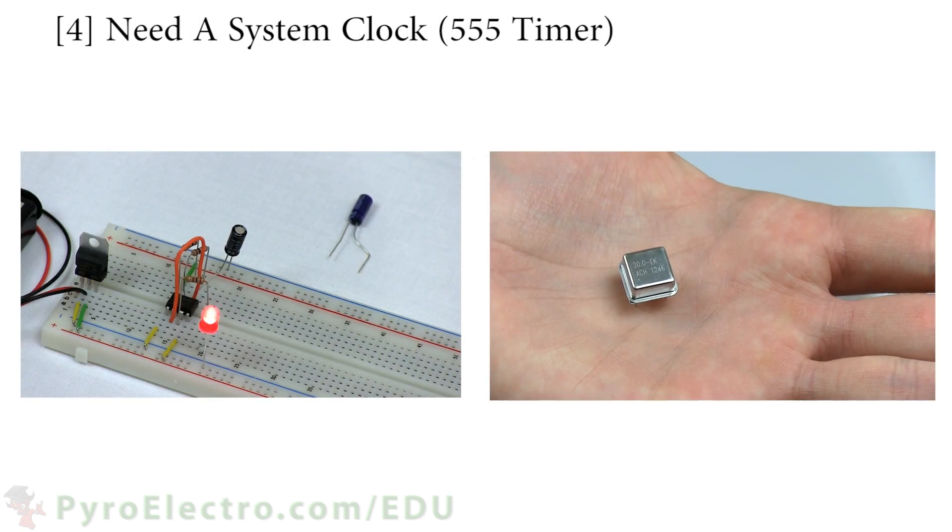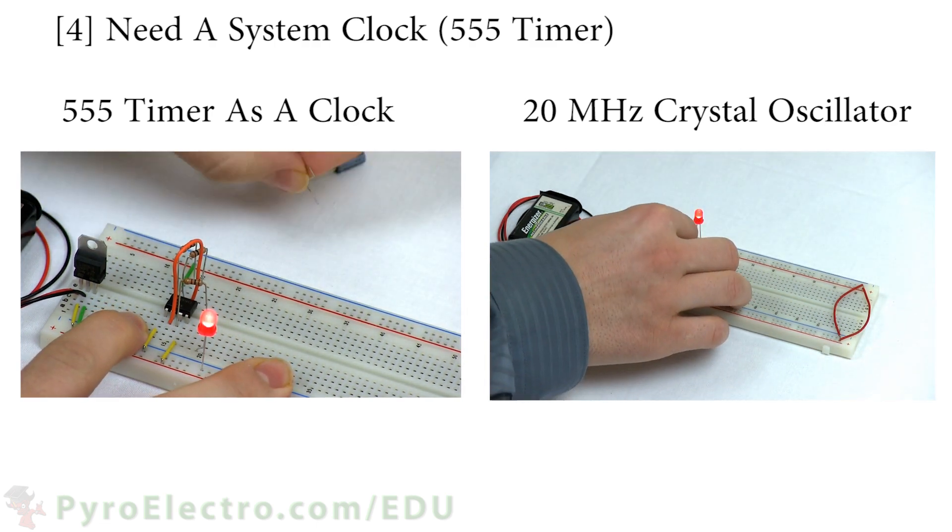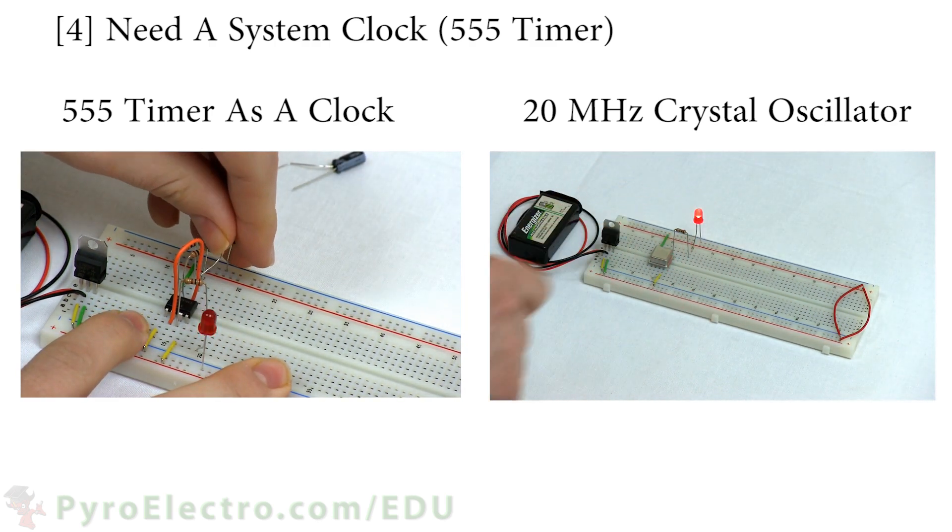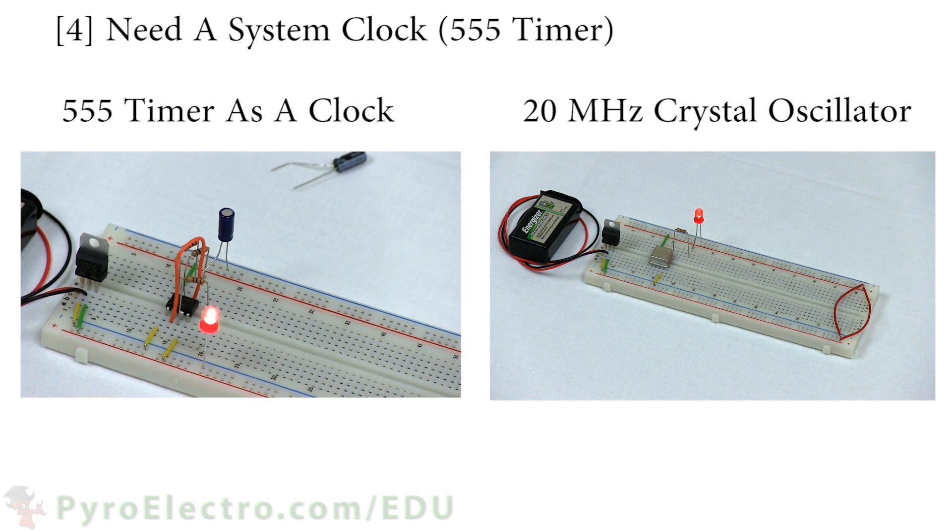The final need is for a system clock. You can use either the 555 timer or the crystal oscillator from the components kit. We will use the 555 timer at 0.5 hertz to start things out.